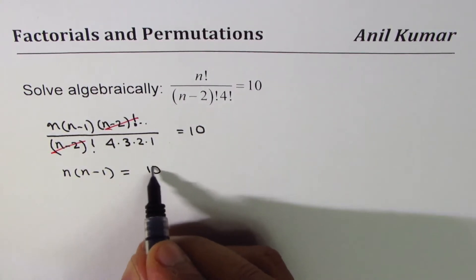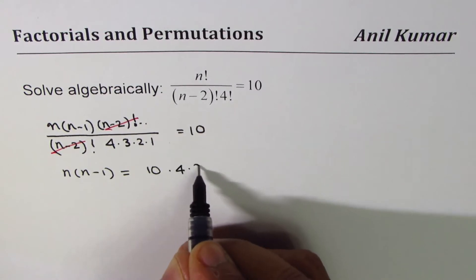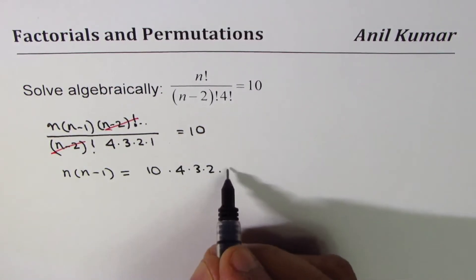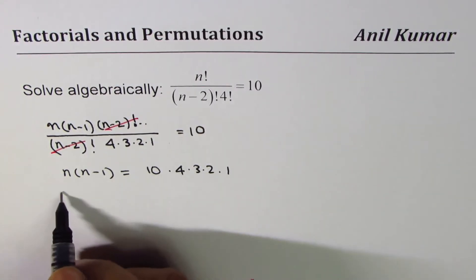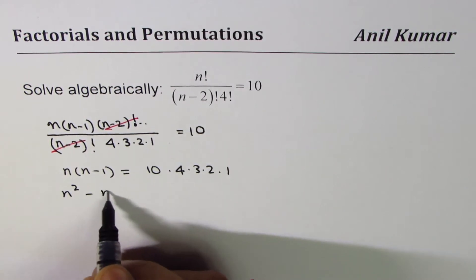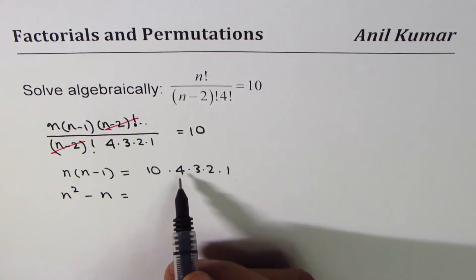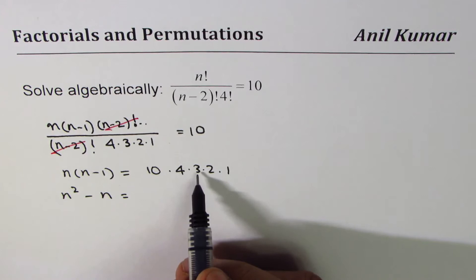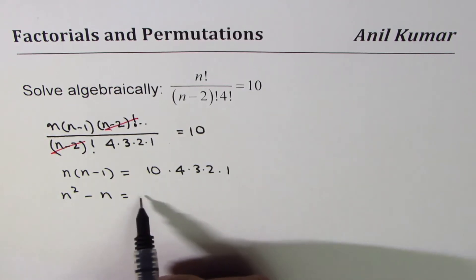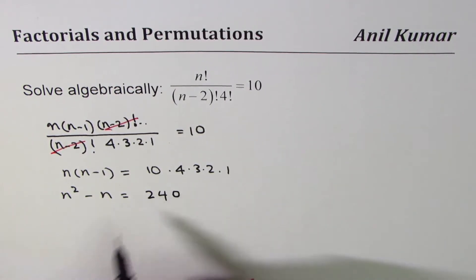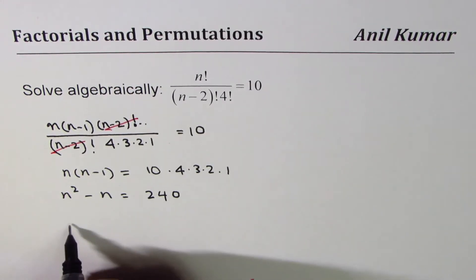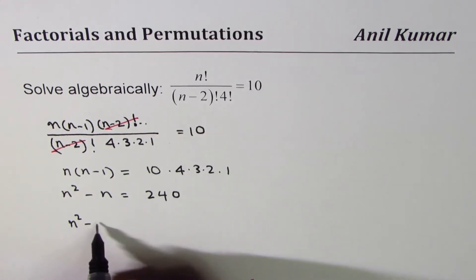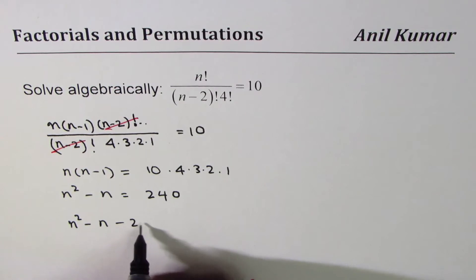Expand it: we get n squared minus n equals... 4 times 3 is 12, 12 times 2 is 24... 240. Bringing them together gives us n squared minus n minus 240 equal to 0.